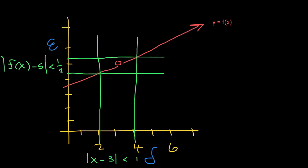In general, your epsilon value is going to be given. You're going to assume some positive number epsilon is given — usually a very small value. You and I have to find a delta that guarantees your function values will be less than epsilon units away from your limit, as long as your x values are less than delta units away from the approach value.